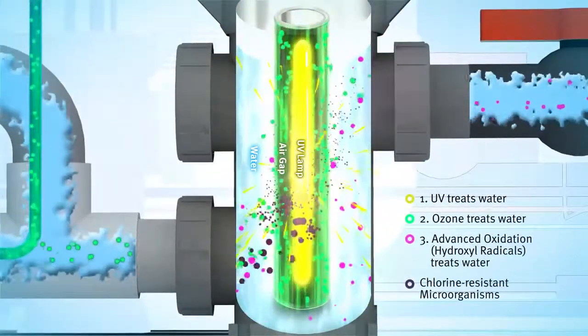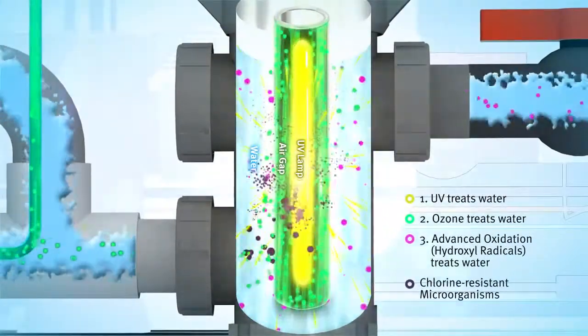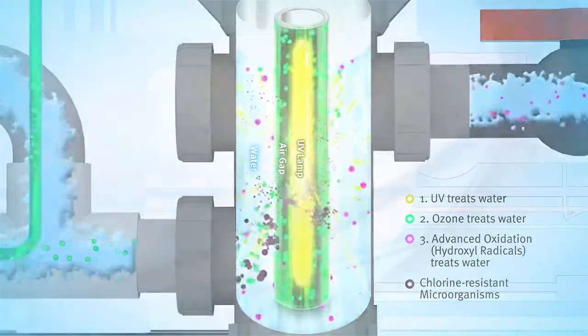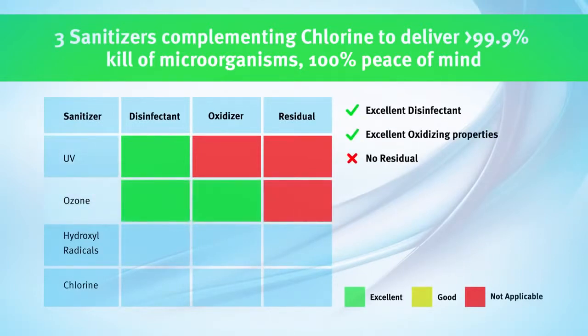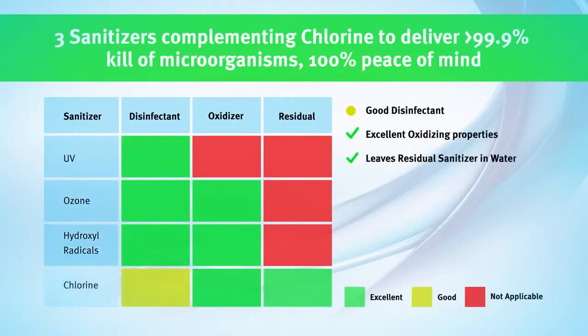When the ozone collides with the UV light, a reaction occurs that creates highly potent hydroxyl radicals. Together, this forms a powerful trio of disinfectants that work synergistically to inactivate greater than 99.9% of chlorine-resistant microorganisms, providing an entirely new level of safe water quality.